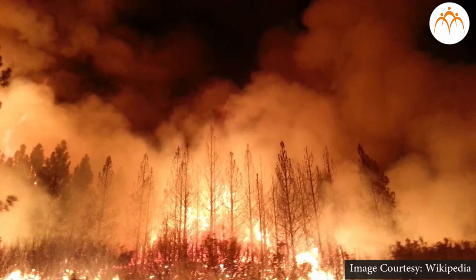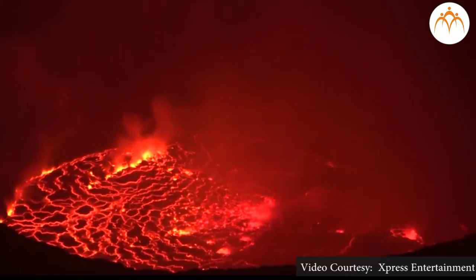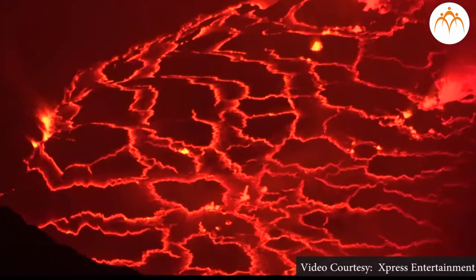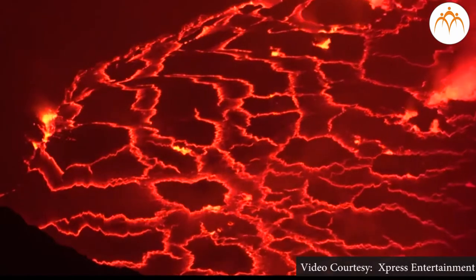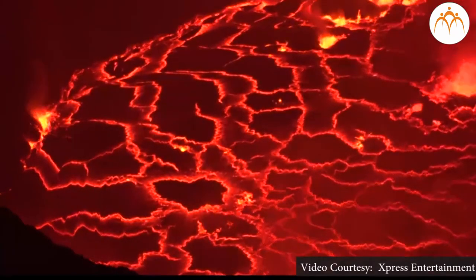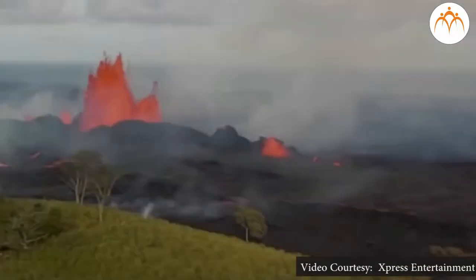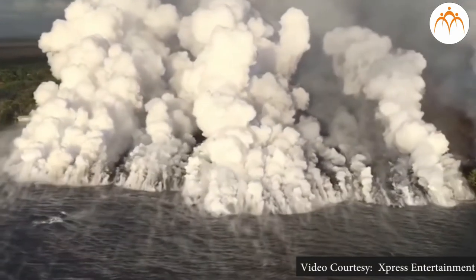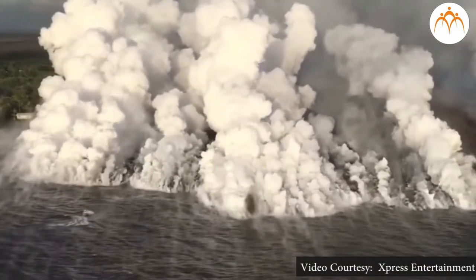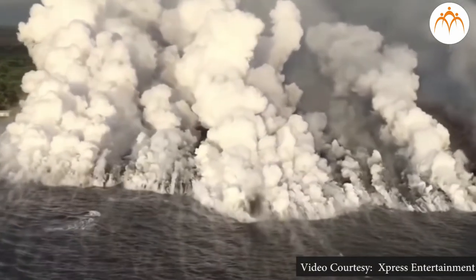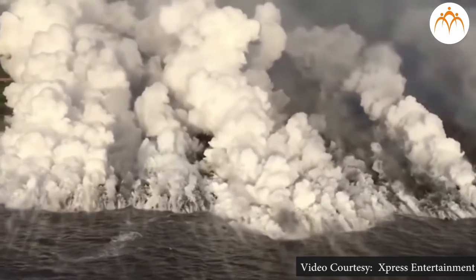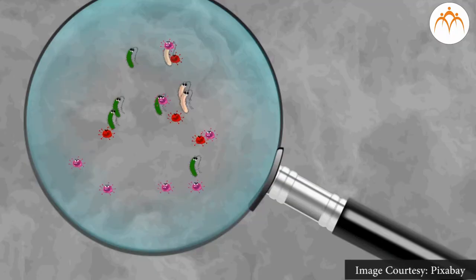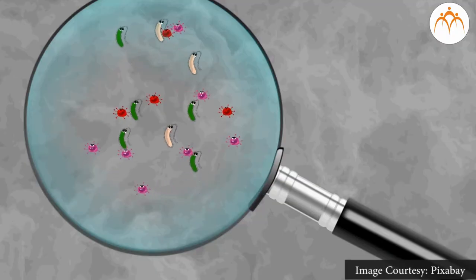From volcanic eruptions, large stones and ashes are thrown out and gases like hydrogen sulfide, sulfur dioxide, CO2, ammonium chloride, hydrogen and vapor are released. At the time of earthquakes, many times the poisonous gases and water vapor get released from the earth's interior and mix in the atmosphere.